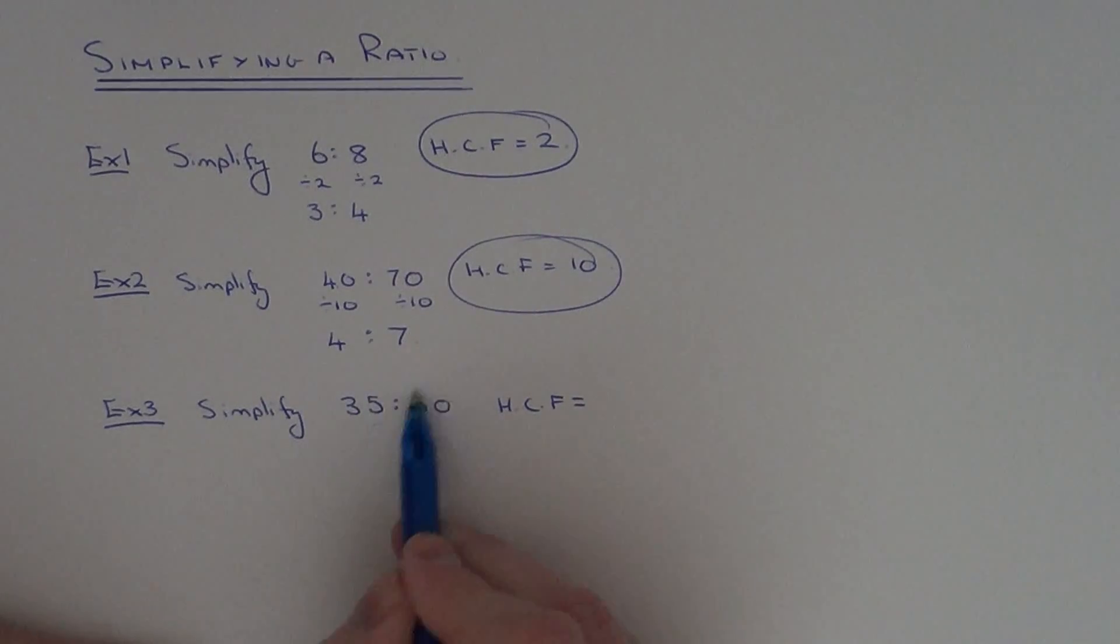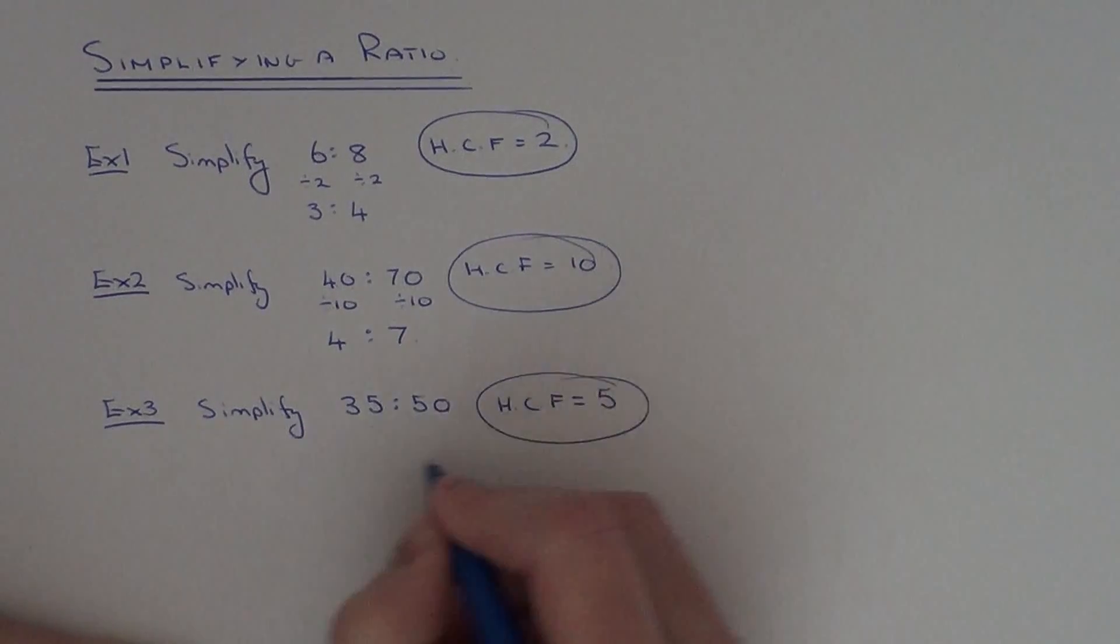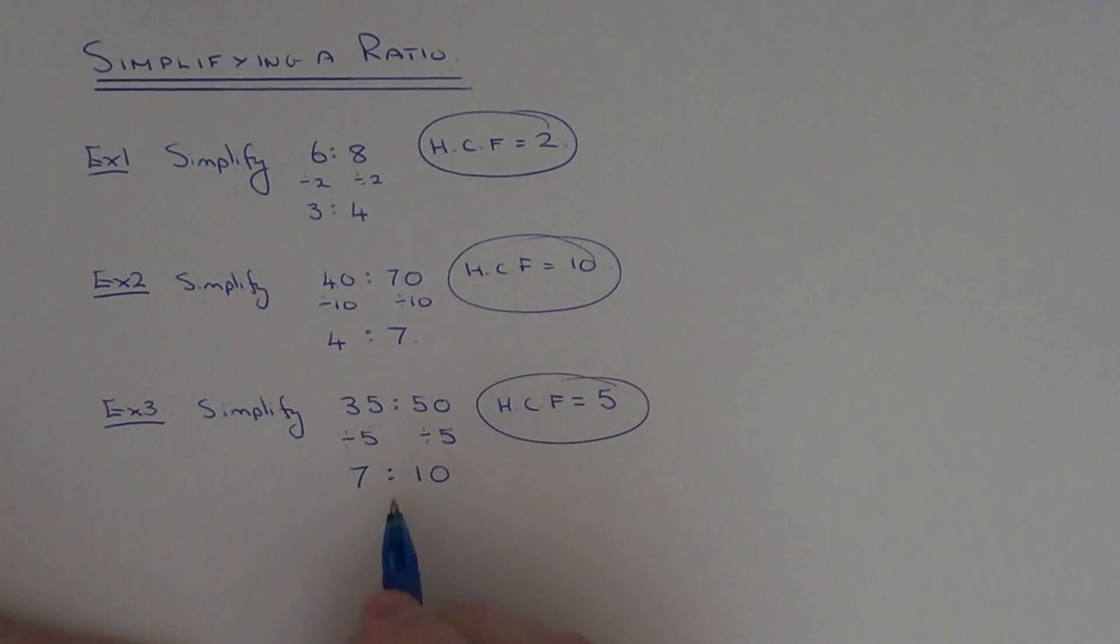So again, divide both sides of your ratio by 5. So 35 divided by 5 is 7, 50 divided by 5 is 10. So we end up with a ratio of 7 to 10 which cannot be simplified any further.